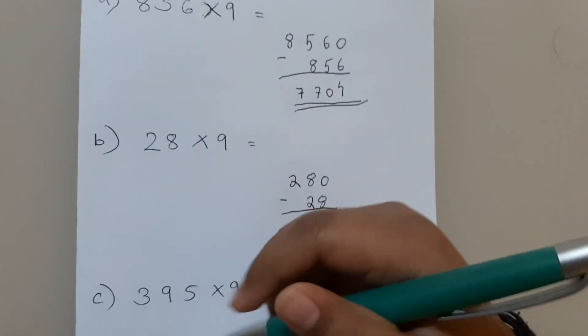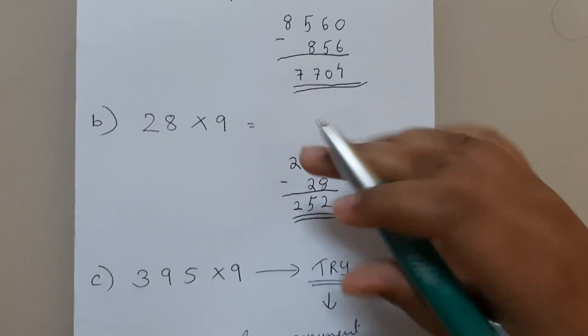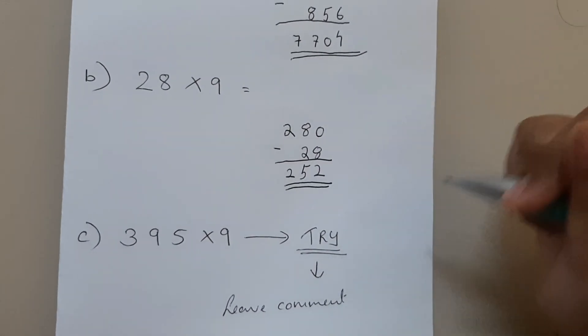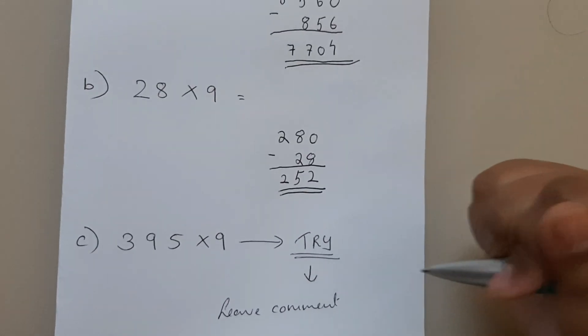The next sum is 395×9. Try it yourself and leave the answer as a comment down in my comment box.